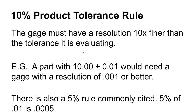There's a quick rule of thumb: if you're evaluating a product that has a given tolerance — say plus or minus 0.010 inches — you need a gauge with a resolution 10 times better than that. This is the 10 percent rule: 0.001 is ten percent of 0.010. You'll also see a five percent rule, referenced in the B89 series, where five percent of a product tolerance of 0.010 would be 0.0005 — five tenths.